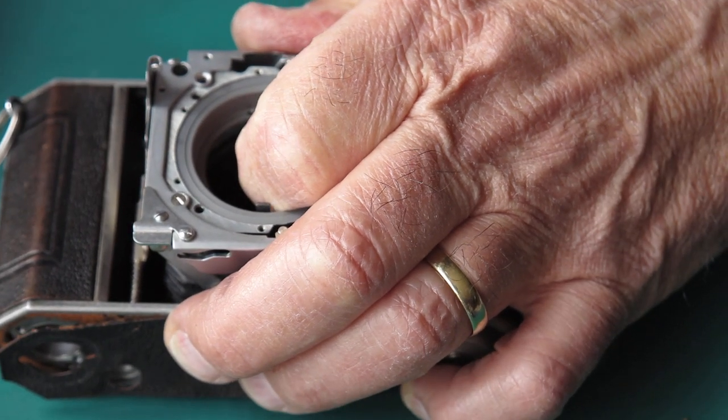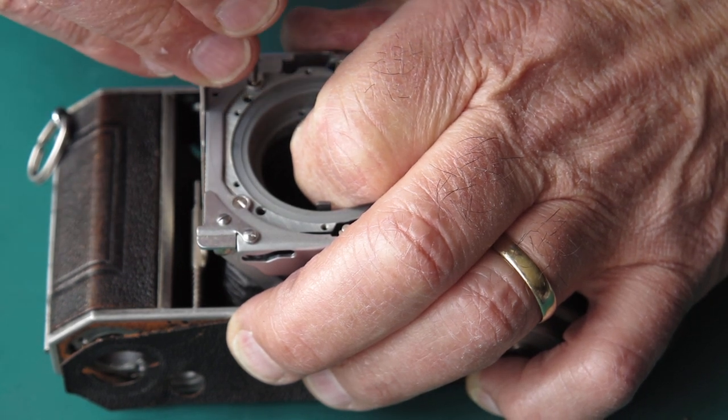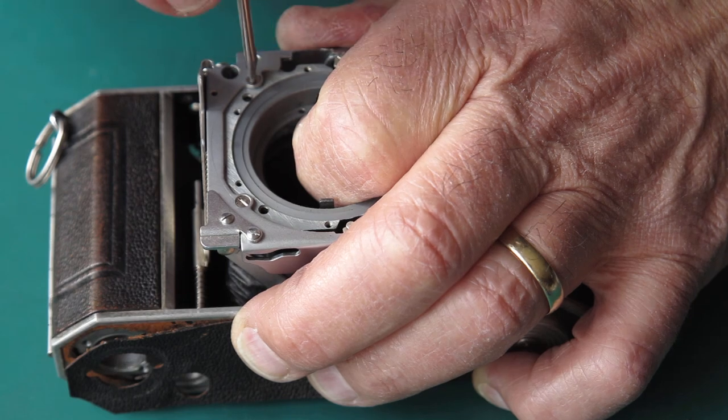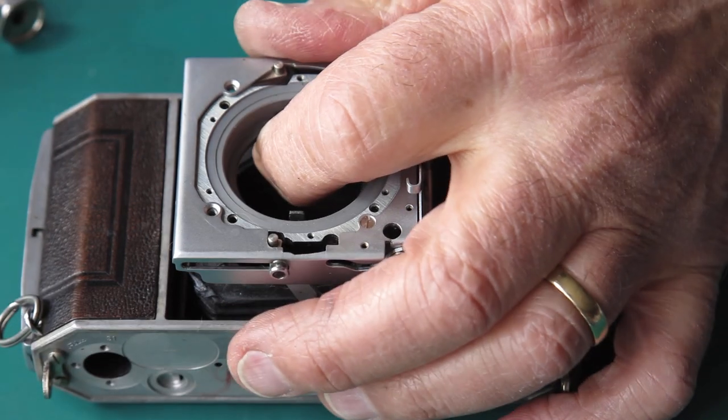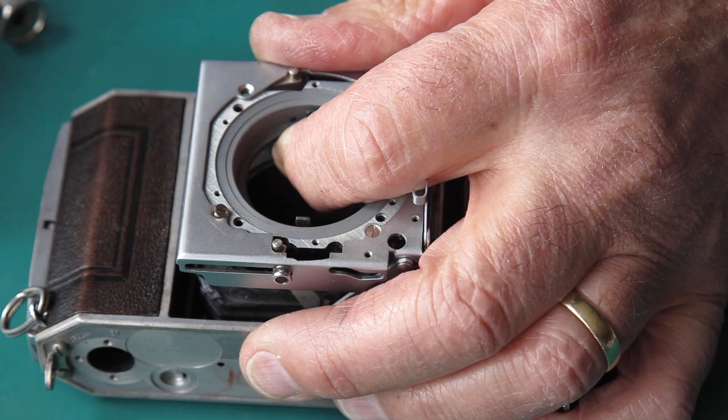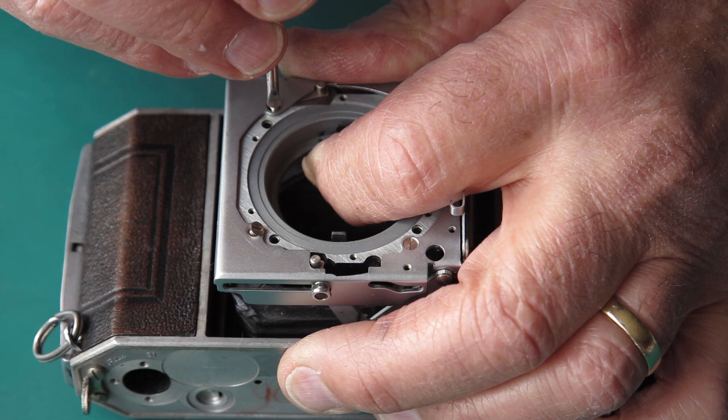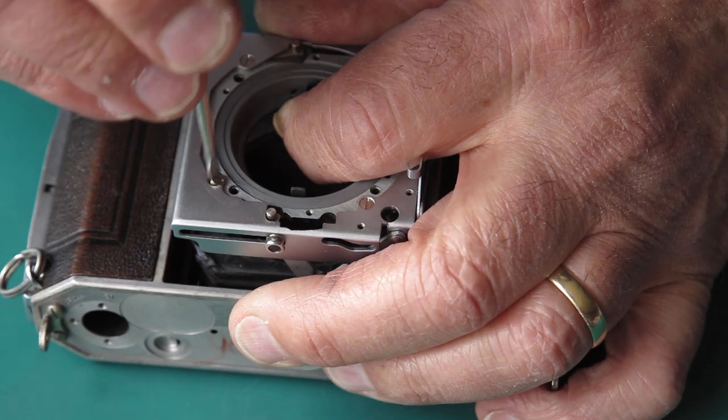Make sure these little arms here are pressed back out of the way. Those arms are there to prevent you from folding the camera unless the focus has been returned to the infinity position. Of course, like a lot of good measures, you can defeat it either with a lot of force or by cunning, and then you end up in strife.